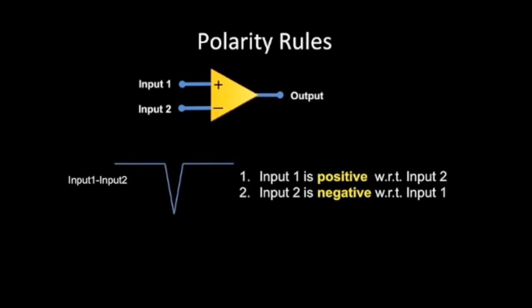Students who are new to EEG sometimes find this difficult as, counterintuitively, an upward deflection is negative in the first input, while a downward deflection is positive in the first input.